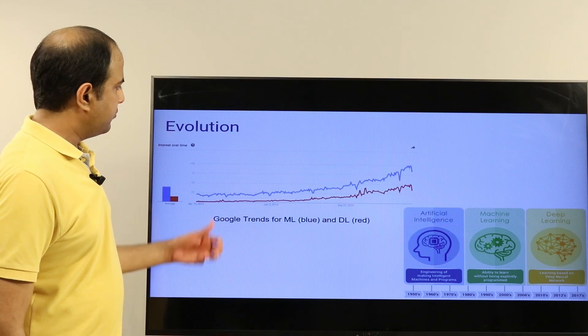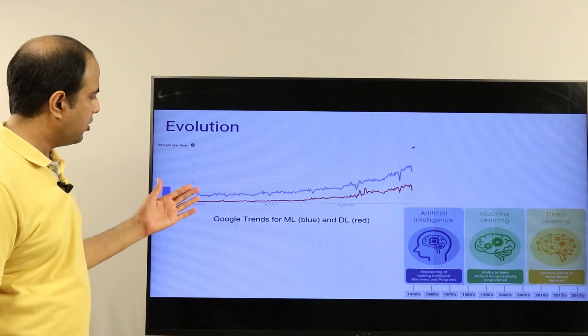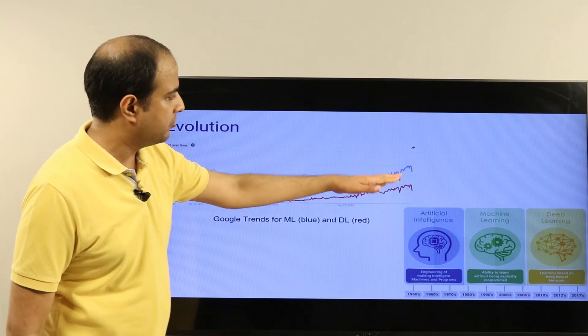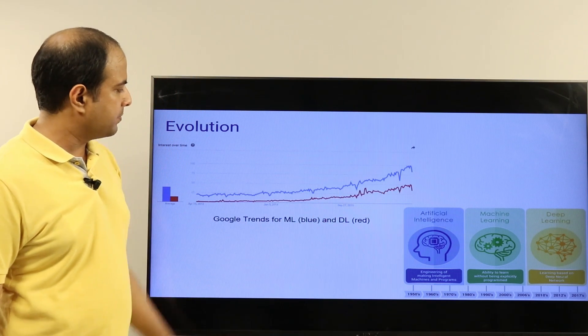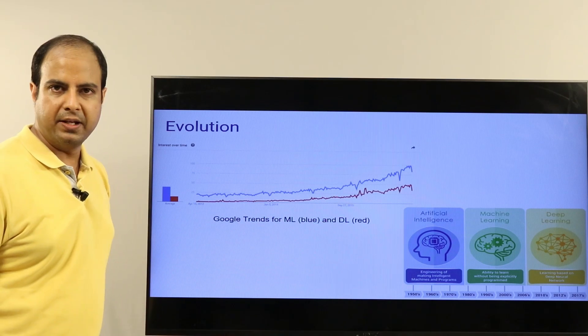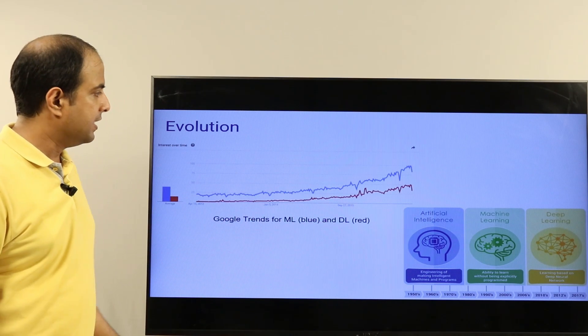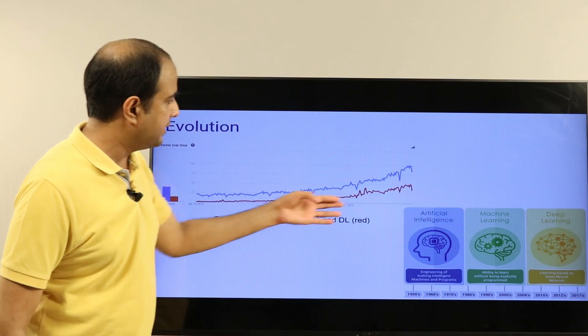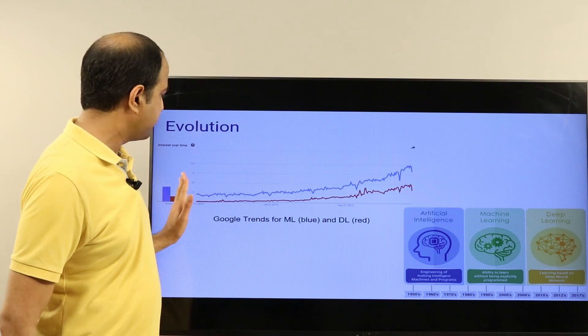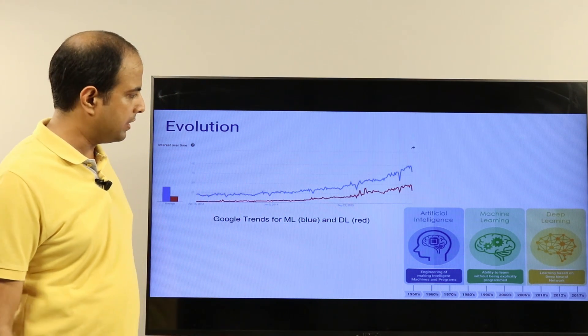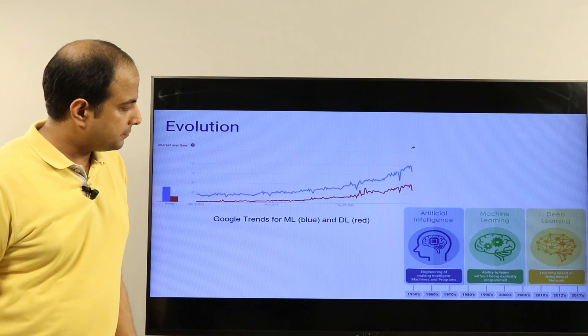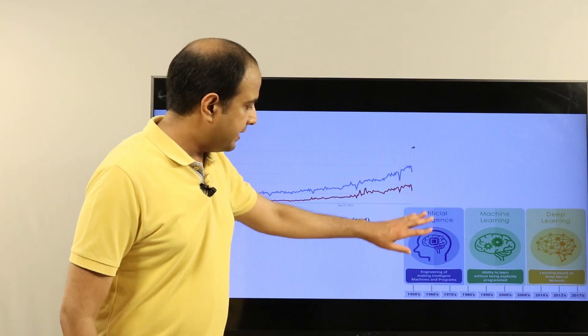This Google Trends chart shows machine learning versus deep learning. The blue curve is machine learning and the red curve is deep learning. You can see that interest in both is growing over time, and interest in deep learning has been significantly growing over the past few years since 2012.